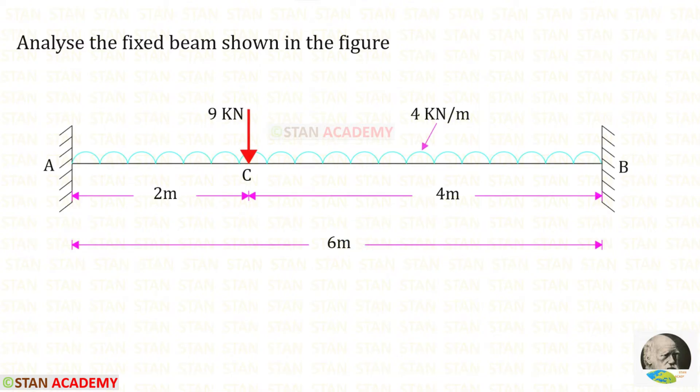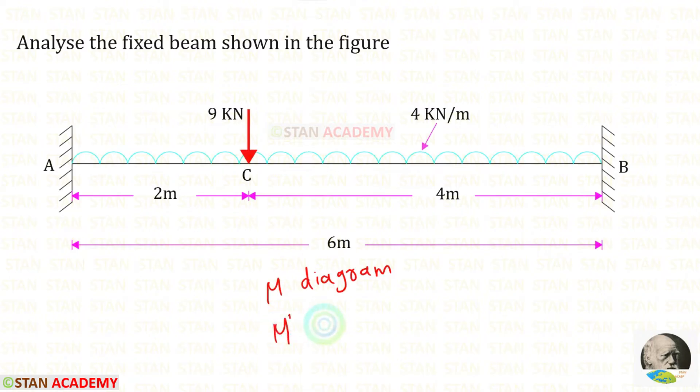Now we are going to find the moments MA and MB. For that we are going to use the moment area method. In that method, first we have to draw the mu diagram, then we have to draw the mu dash diagram.